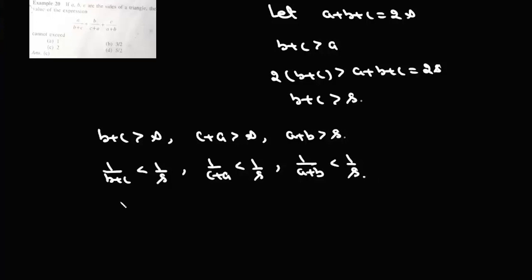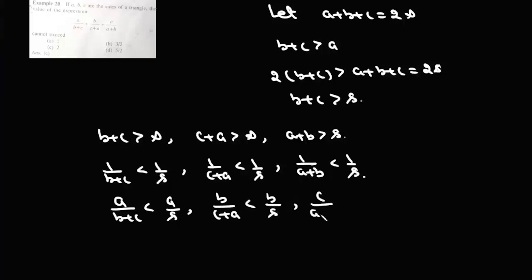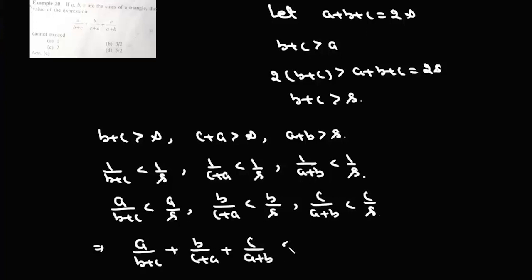Multiplying the first inequality by a gives a/(b+c) < a/s; similarly b/(c+a) < b/s and c/(a+b) < c/s. Adding all three: a/(b+c) + b/(c+a) + c/(a+b) < (a+b+c)/s. Since a+b+c = 2s, this is always less than 2. So this value cannot exceed 2, and that's option C.